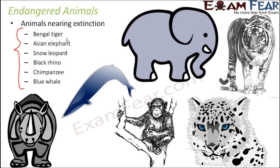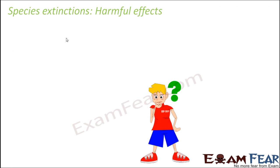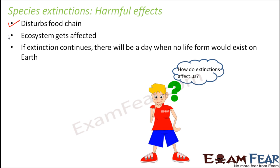Earth has rich diversity and we should try our best to maintain it. So what would happen if species become extinct? Let us look at some harmful effects. First of all, it is going to disturb the food chain.